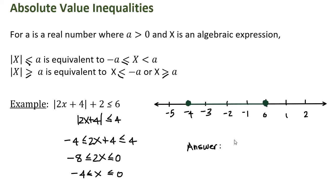To write my answer in interval notation: because I have the equal sign, I have to include the endpoints. I use a square bracket to indicate I include the endpoint negative 4, and a square bracket to include the endpoint 0, including all the points between negative 4 and 0 — for example, negative one half, negative 2.001, negative 3.99999, and so on. The answer in interval notation is [-4, 0].